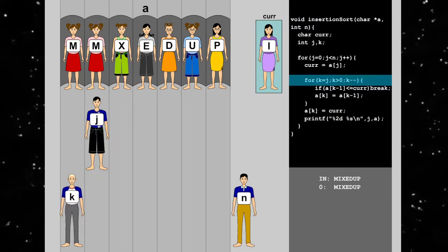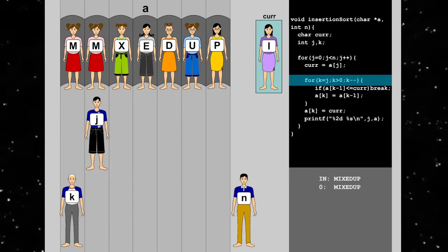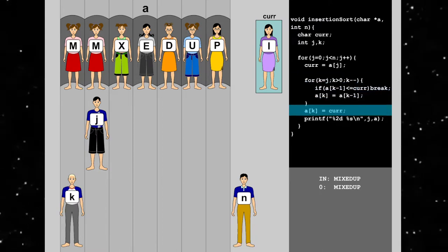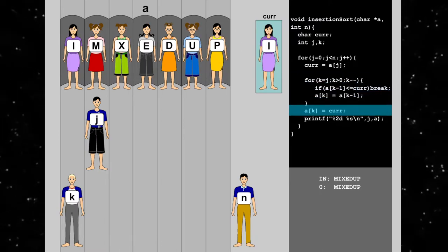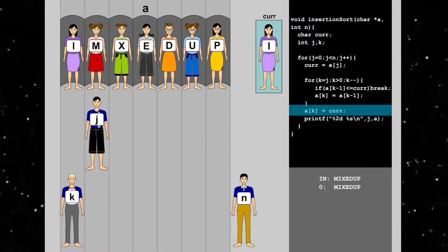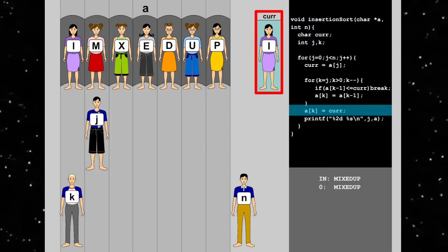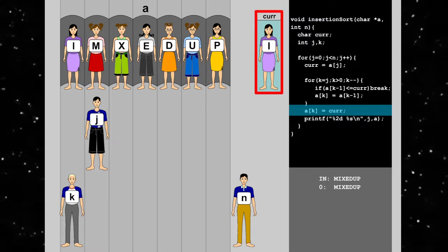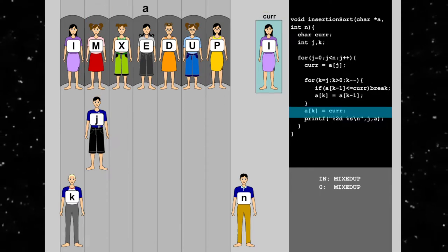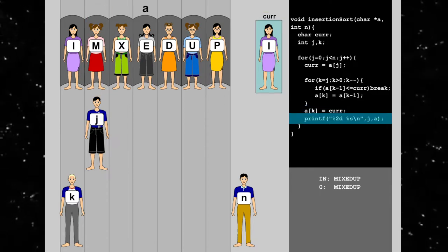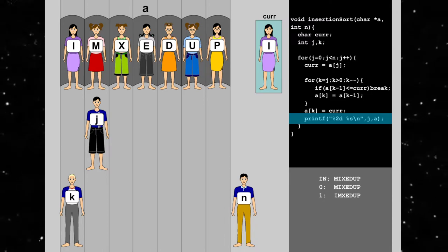k is now 0, hence the inner loop terminates. We copy the value of car into the current position. In this way, we have successfully inserted the character i into the right position with respect to m. We continue to print out the integer held in j and the current value of a.